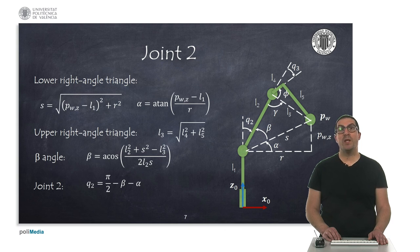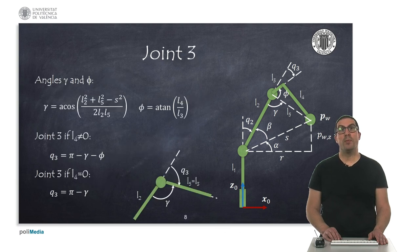So, once we know these sides of a triangle, we can use the cosine theorem to find out the values for any angle. In particular, we can compute the angle beta together with alpha will provide us the actual value for the coordinate Q2. Similarly, we can compute the values for the angle gamma and phi from basic trigonometric relations. Once we know those angles, we can compute the value for Q3 as indicated.